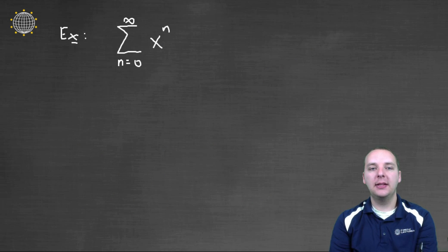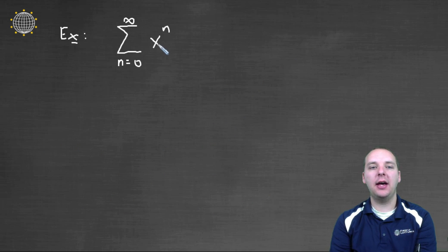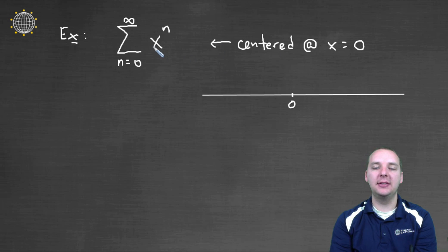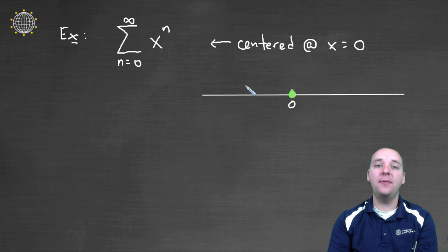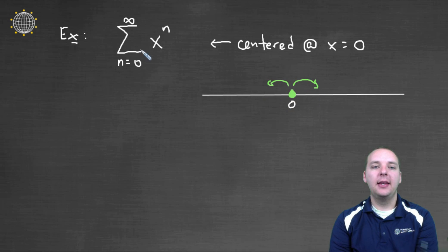To explain this further, let's look at a specific example. I've simplified by letting the a's equal one, so we just have x to the n. This will converge for some x's and diverge for others. First, this series is centered at zero — it's x minus zero to the n — so I'll put a green dot there, meaning it definitely converges at zero. Beyond that, it might converge to the left or right of zero, and that's what we need to investigate. What does this series remind you of?